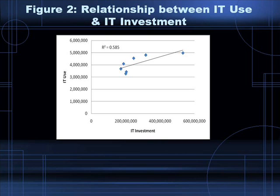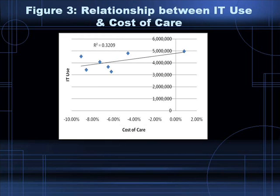In this figure, when analyzing the relationship between IT use and the cost of care, a relationship of 0.32 reveals that these two variables represent the weakest relationship among IT investment, IT use, and the cost of care provided in the data given.